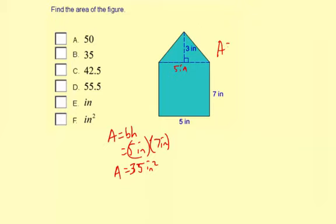For the triangle, the area is 1 half the length of the base times the height. So that's 1 half times 5 inches times 3 inches.